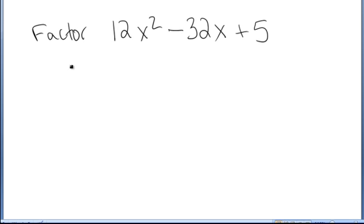Alright, this time again I'm going to think about factoring out the greatest common factor, but this time I see that there is nothing in common besides 1, so there's no common factor to factor out first. Instead, I'm going to notice a is equal to 12, b is equal to negative 32, and c is equal to 5.